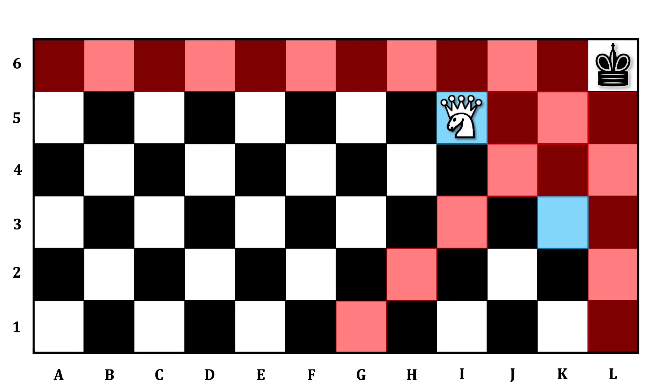As a result, if you manage to place the Amazon into I5 on your turn, you will win. But because I5 is a winning square, we now know other places you cannot place the Amazon and expect to win.